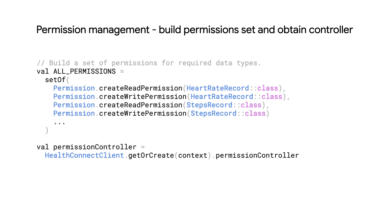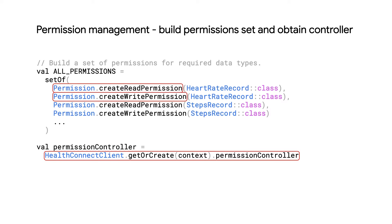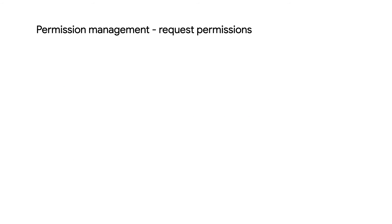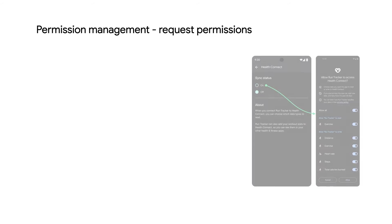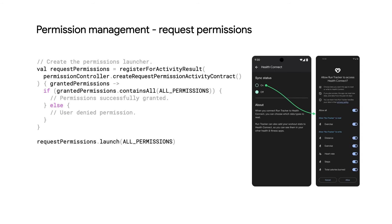You'll start with building a set of all the permissions that you would like to include in the request. Then grab a reference to the permission controller. Note, you may have several sets of permissions if you are planning to request different permissions in different places in your app. Now we're going to build our request. You'll call Create Request Permission Activity Contract on the permission controller reference you had previously acquired.